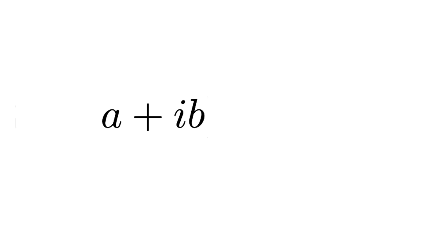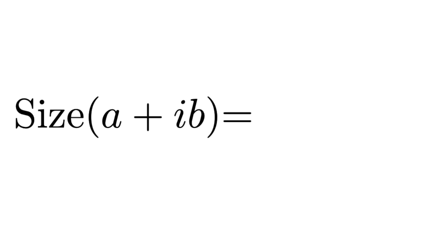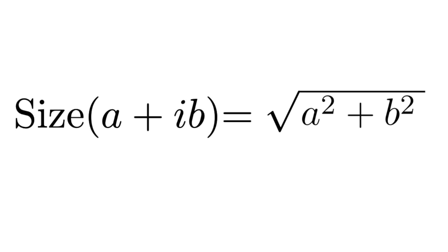A number system would be no good if there wasn't some way to determine how big a number was, or how far away one number was from another. If you've got some complex number that's a real plus some imaginary component, and you want to know how big that number is, you just take the square root of the sum of the squares of each of those components, same as it would be if they were two sides of a right triangle.